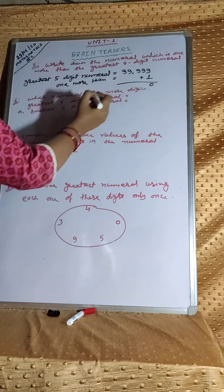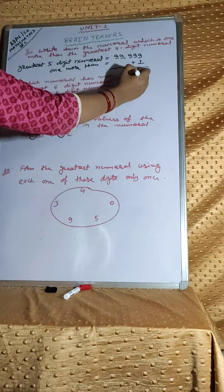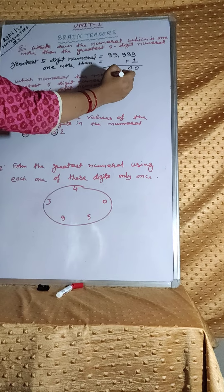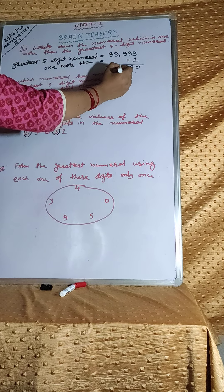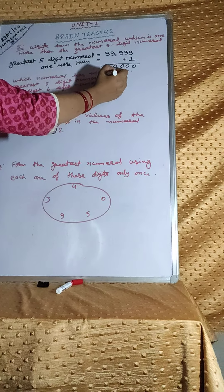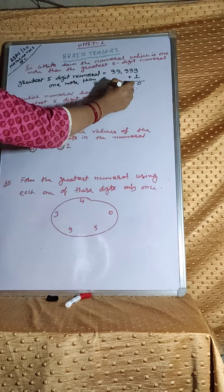We will write 0, carry 1. Again 9 plus 1 is 10, write 0, carry 1. This pattern continues for each digit: 9 plus 1 equals 10, write 0 and carry 1, until finally 9 plus 1 equals 10. That will be 1 lakh.